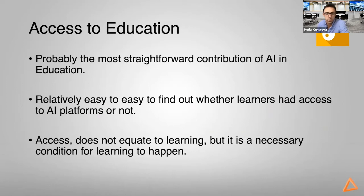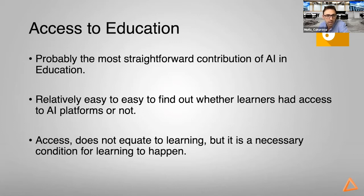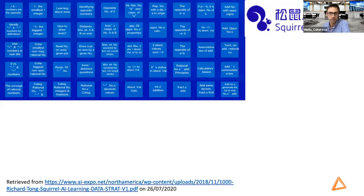Starting with access to education — from the research and existing evidence point of view, access to education is perhaps the most straightforward argument for AI's value in education. Obviously access does not necessarily mean good quality education will be provided, but it is a necessary, if not sufficient, condition for effective learning. It is relatively easy to judge whether learners have access to an AI platform, but we should not forget that access doesn't always equate to learning.